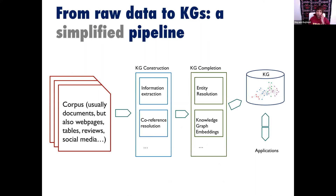Let's delve into some technical details on how to actually build and use a knowledge graph. At a high level, we always begin with a corpus — documents like Wikipedia, but also logs, web pages, tables, reviews, or social media. It doesn't have to be homogeneous. Then there are two big steps: KG construction and then building applications around the resulting knowledge graph.